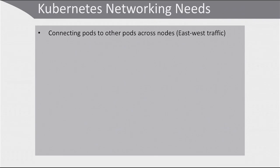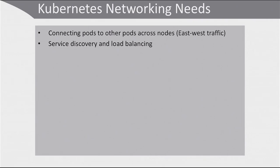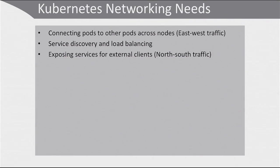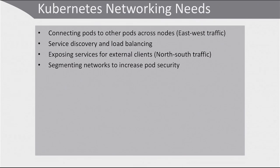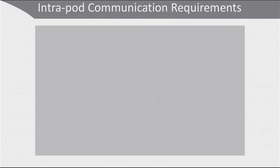The Kubernetes networking needs include: a need to connect pods to other pods across nodes — that's what we call east-west traffic. There is a need to do service discovery and load balancing as well. There is a need to expose services for external clients, and that's what we call north-south traffic. And last, there is a need for segmenting networks to increase pod security. All of these needs have a different requirement for networking.